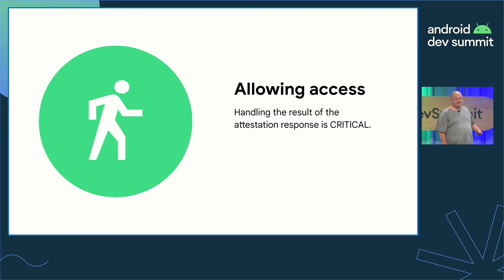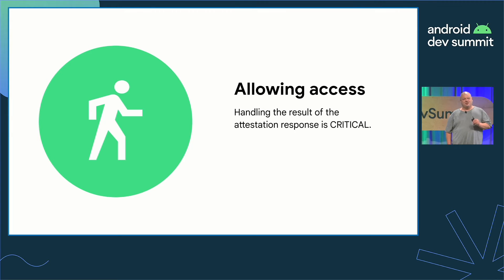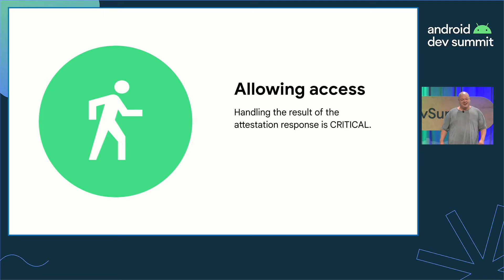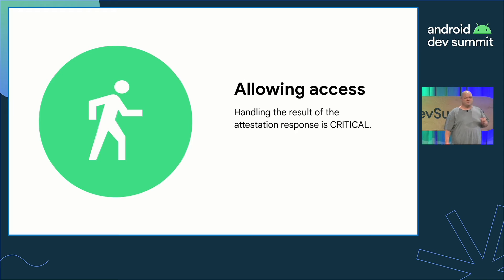From there, you take action to allow or block the user based on the return information. The functionality of attestation itself will not make the decision for you. It's crucial for you to think of the impact of allowing users to take action and what the alternative is. Not all devices will have the most recent security patch, or you might not support advanced features like Strongbox, and you as the developer must decide how to navigate based on the responses and the nature of the access the user is requesting.